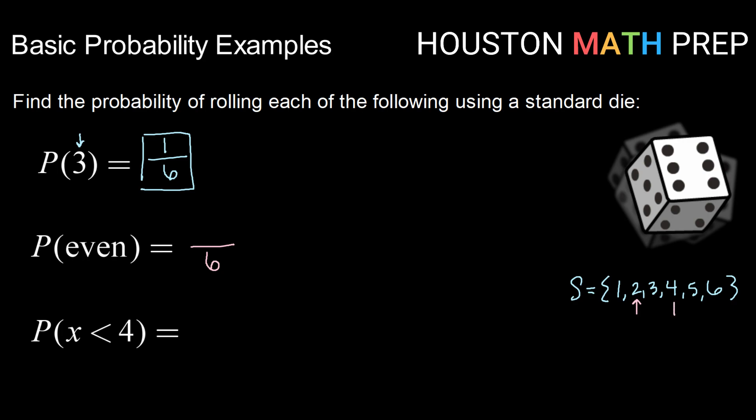Well, we have two is even, four is even, and six is even. So three of the items in our sample space out of our total outcomes of six are even. So reducing that, the probability of rolling an even number on a standard die is one-half.